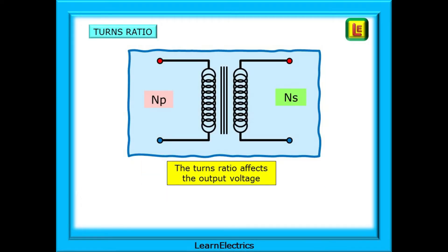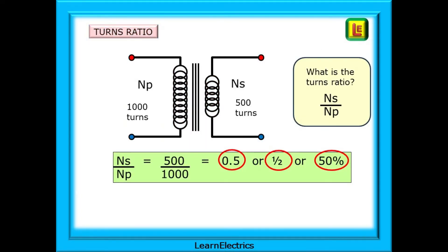The number of turns on the primary and secondary is known as the turns ratio. The ratio of the input turns to the output turns determines the output voltage in relation to the primary or supply voltage. These are labeled as NP for primary turns and NS for secondary turns. The turns ratio is simply NS divided by NP, the number of turns on the secondary side divided by the turns on the primary side.